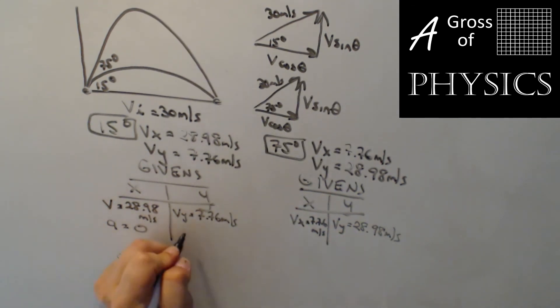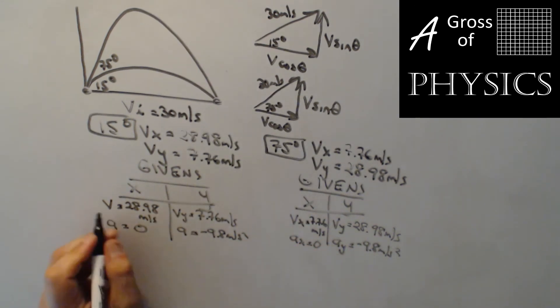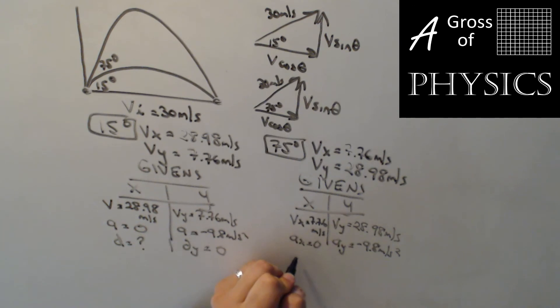A is 0, A is negative 9.8. A is 0, A is negative 9.8. D is what we're looking for in the X, and DY is 0. D is what we're looking for in the X, DY is 0.